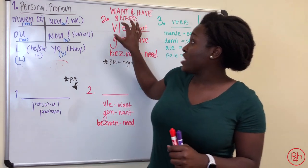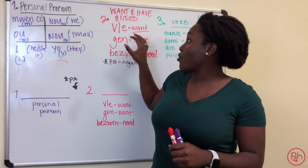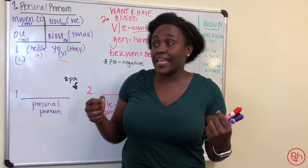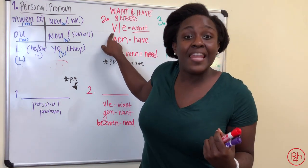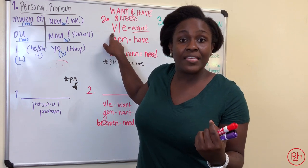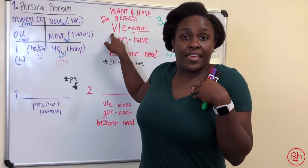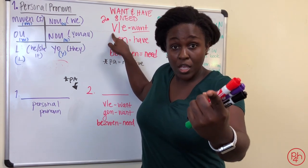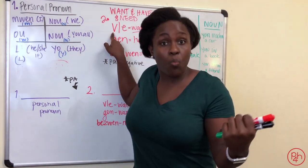We start with personal pronoun. Then you move into saying either you want, have, or need. If you want to say want, you would say vle. Again, that is vle. Mwen vle, I want. U vle, you want. Yo vle, they want.